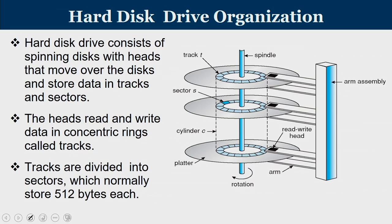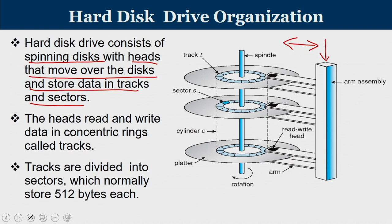The hard disk drive organization basically consists of a spinning disk with heads that move over the disk and store data in tracks and sectors. The arm assembly can move inward and outward while the spindle rotates. Due to the rotation of the spindle, the head can touch any portion and reach any track. Concentric tracks are divided on the platter, with different sectors in each track, and data is stored there using magnetic properties.